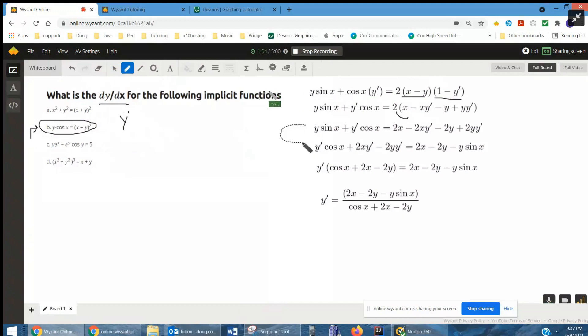And finally, to get from here to here, I moved all the terms containing y prime to the left side of the equal sign, and all the terms without a y prime I moved to the right side of the equal sign. And finally, I'm going to factor out that y prime on the left side and then divide both sides by the coefficient of y prime. So here's your formula for dy/dx.